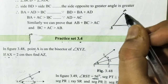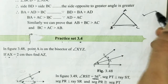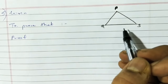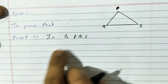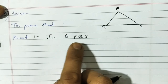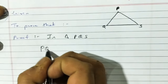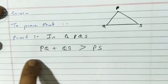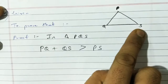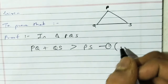So in triangle PQS, the sum of two sides is greater than the third side. Therefore PQ plus QS is greater than PS. This is equation 1. The reason is: sum of any two sides of a triangle is always greater than the third side.